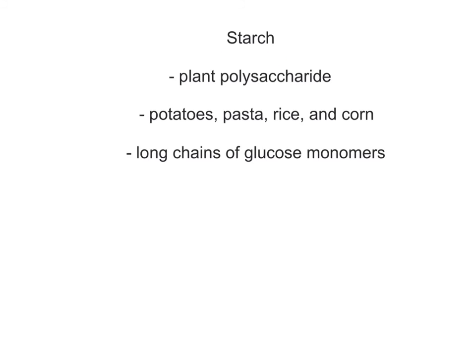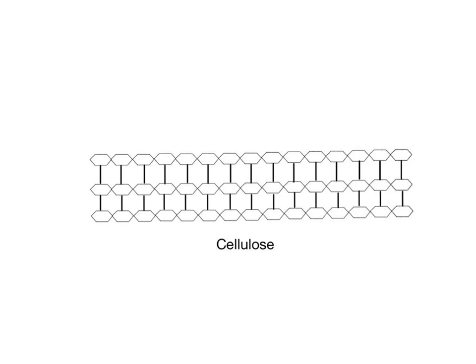Starch is the main polysaccharide produced and stored by plants and is the major carbohydrate in foods such as potatoes, pasta, rice, and corn. Like glycogen, starch consists of long chains of glucose monomers and can also be broken down through hydrolysis reactions. Another polysaccharide found in plants is cellulose, also made out of chains of glucose monomers like starch, but it cannot be broken down by hydrolysis reactions because of differences in its chemical structure. Cellulose is commonly called fiber and is important in our diets because the excess bulk it provides helps in the elimination of feces from our digestive tracts.